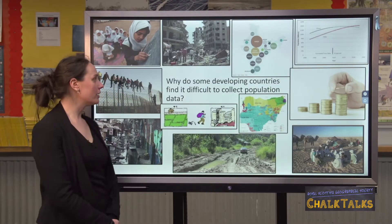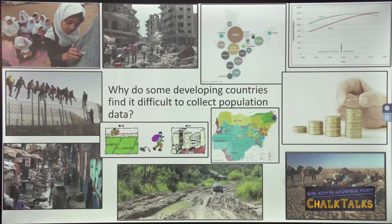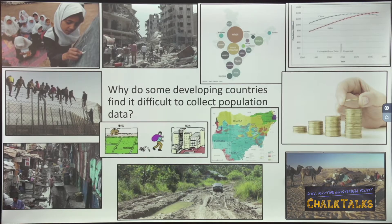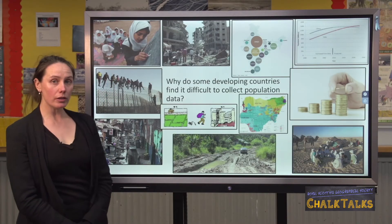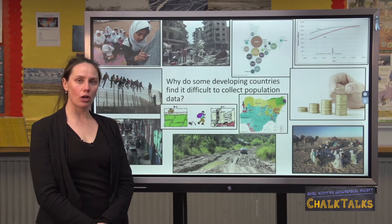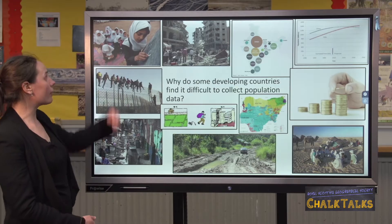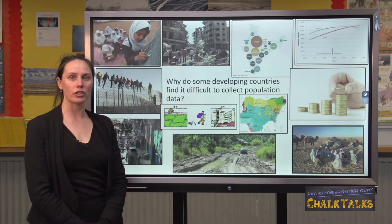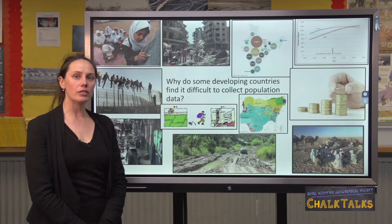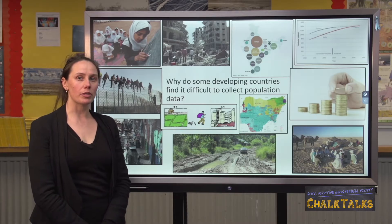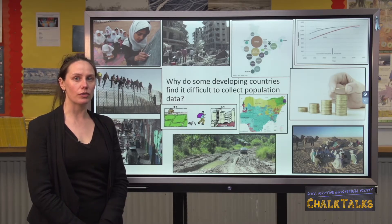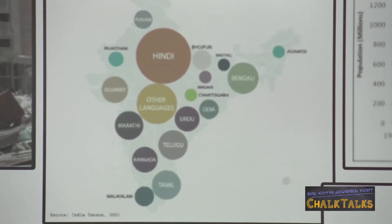Another question you might be asked is why some developing countries find it difficult to collect population data. One reason is literacy rate — if a country has a low literacy rate, people will struggle to fill in the census form. For example, in Afghanistan only 43% of the population are literate. Another reason is if there are many languages spoken in a country, making it more expensive as the census form needs to be translated. A good example is India, which has 30 languages with more than a million native speakers.